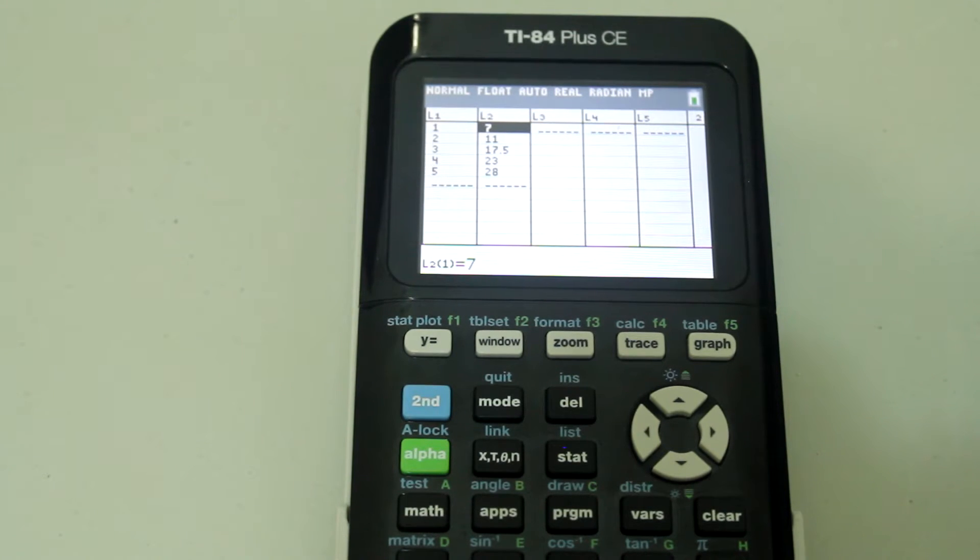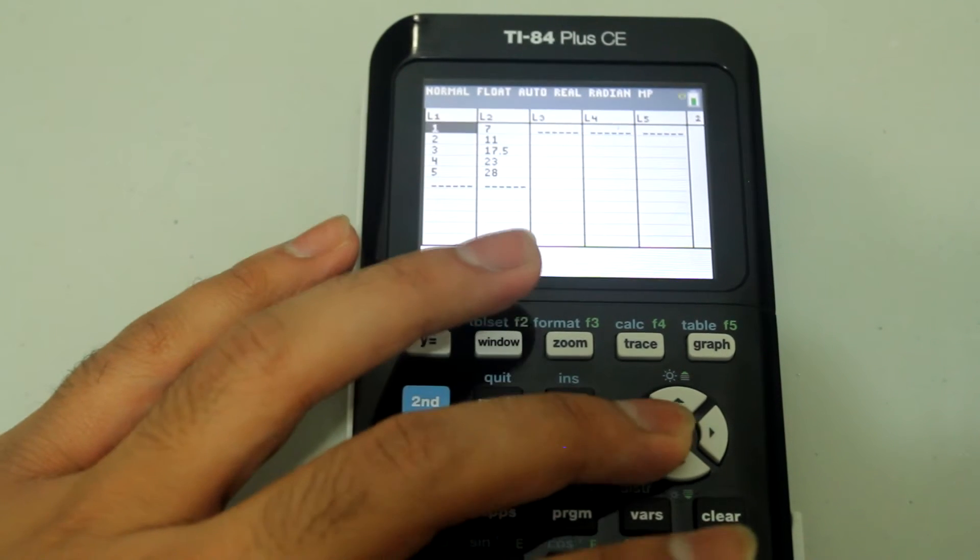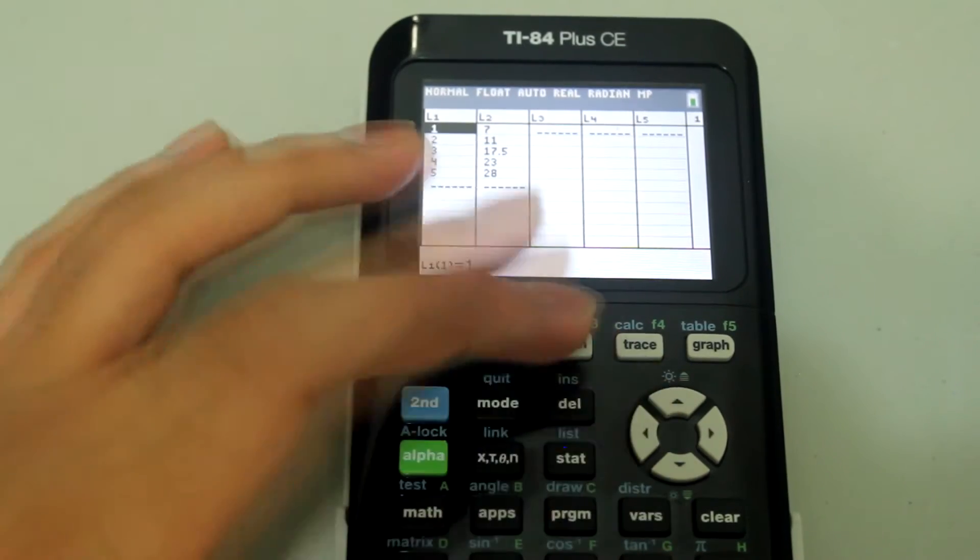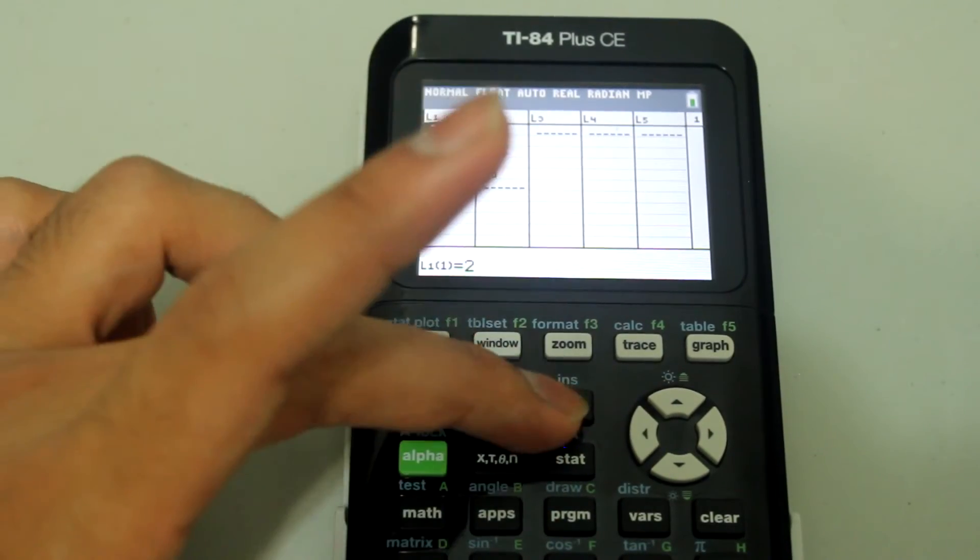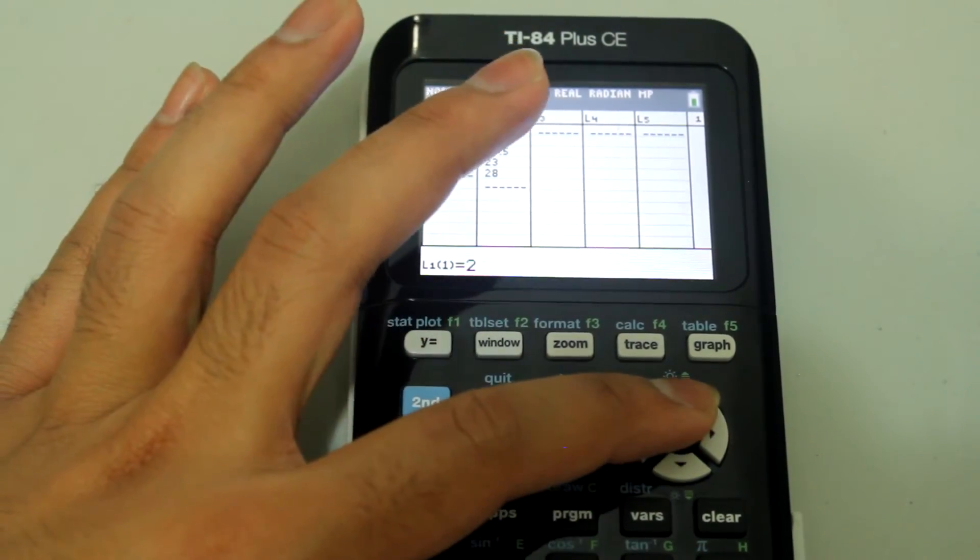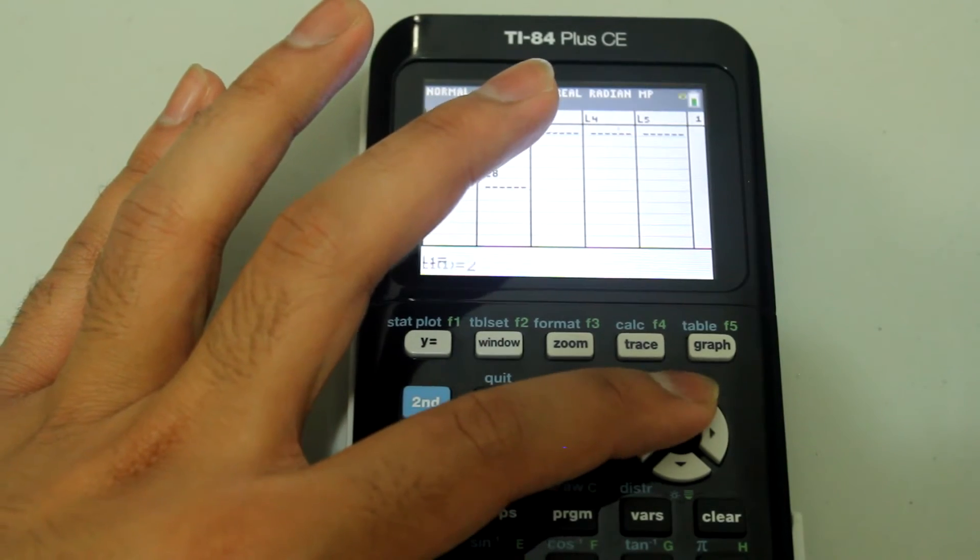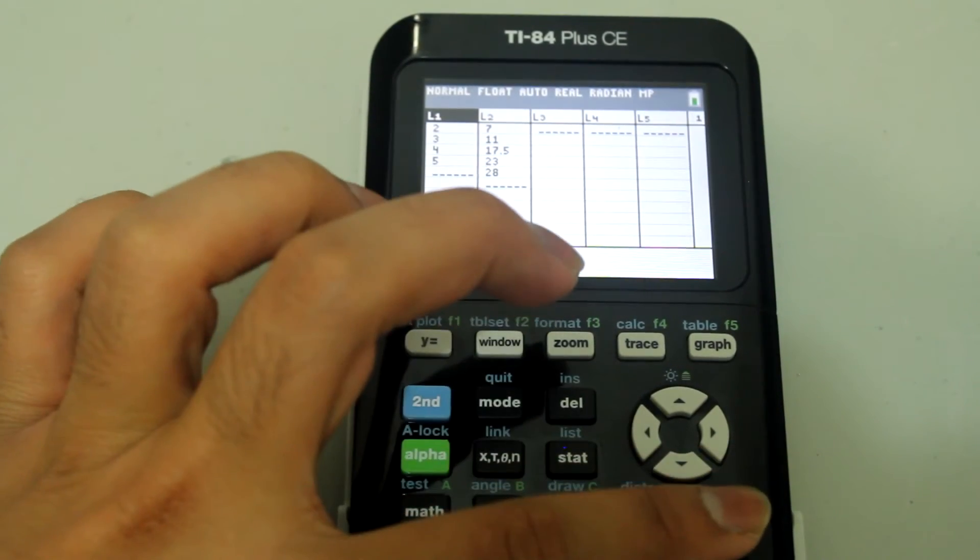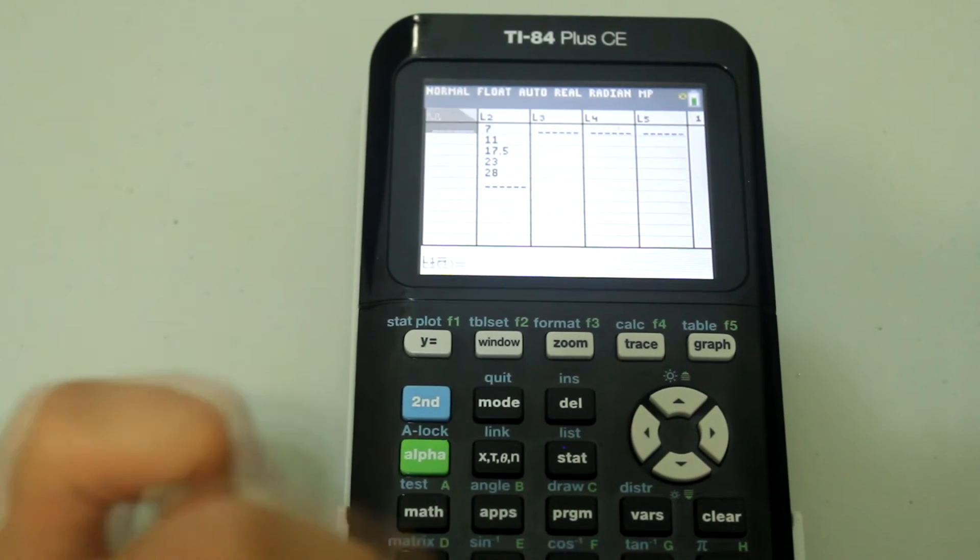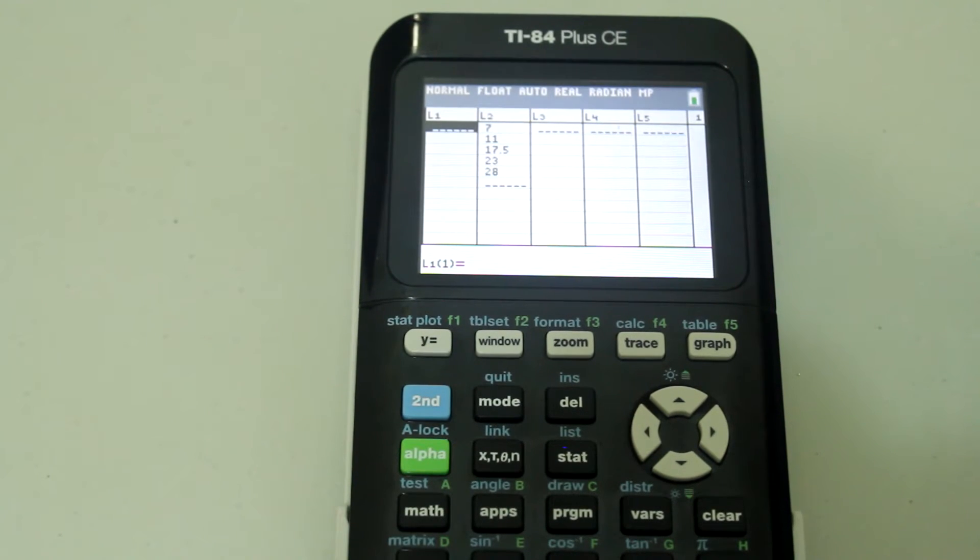If there are existing numbers there and we want to clear them, what we can do is instead of deleting one by one by using the delete button, go up to where it says L1, hit clear and then enter and it should clear the list for you.